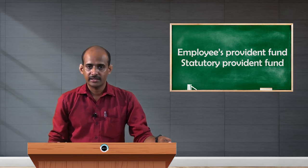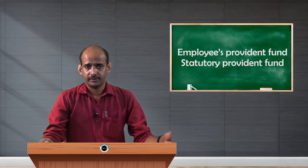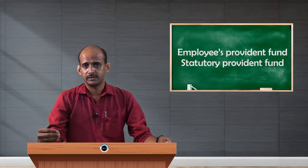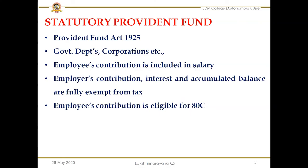Let us learn the provisions of the Statutory Provident Fund. As mentioned, different types of Provident Funds are there to meet the needs of different categories of employees. The Statutory Provident Fund is the fund which meets the needs of employees working in the government sector. This fund was established in the year 1925 as per the Employees Provident Fund Act of 1925. It is for employees working in government offices, government departments, government corporations — for example universities or colleges, RBI, or railways. Employees working in these fields can take the benefit of this scheme.